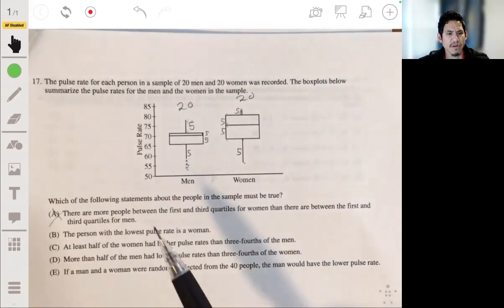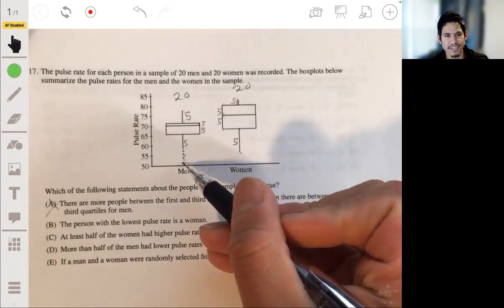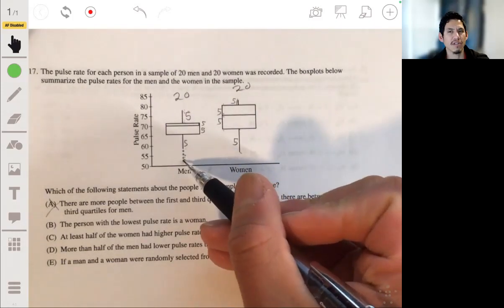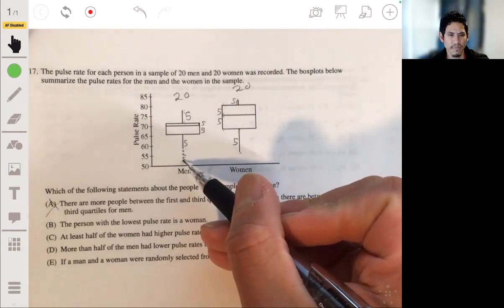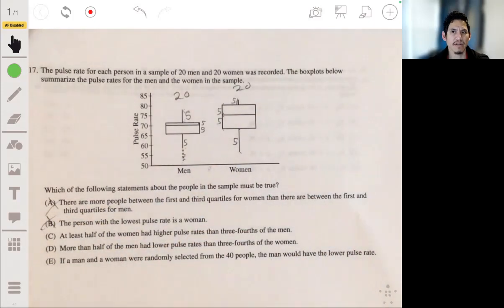The person with the lowest pulse rate is a woman? No, because it's a man. You can see these outliers. These count. These are outliers, they still count. Those marks are just a way to represent outliers. Usually the rule will be more than 1.5 IQR units away from Q1 or Q3, above Q3 or below Q1.